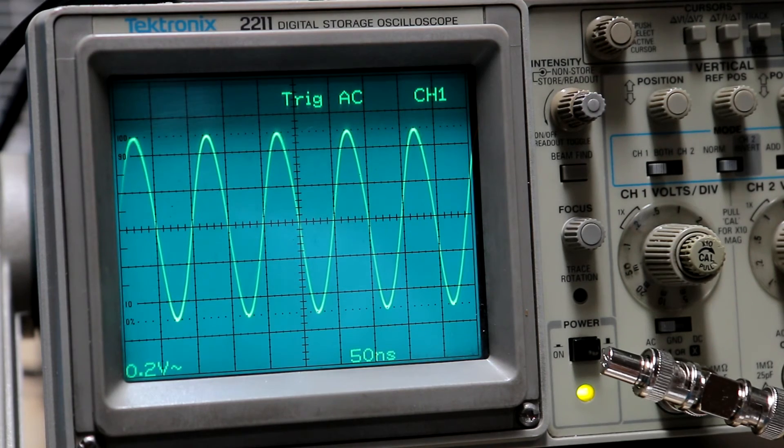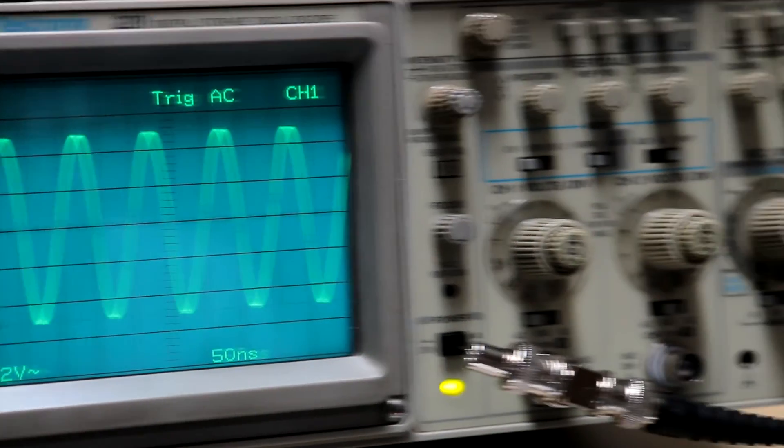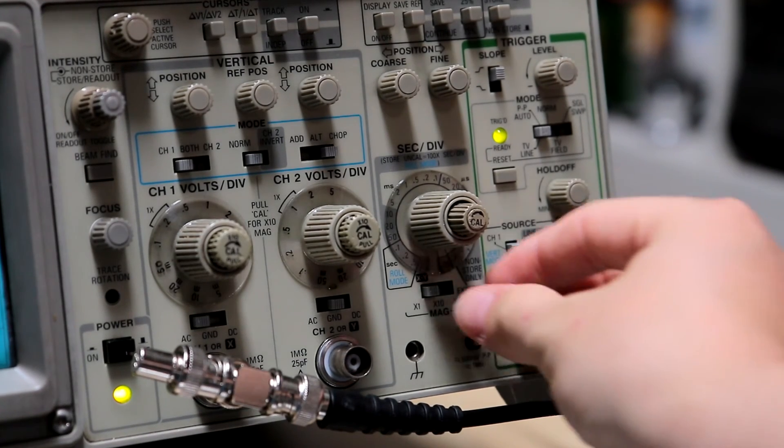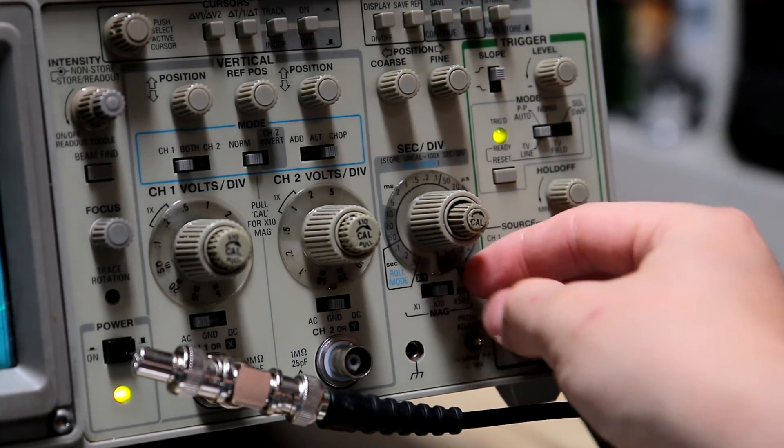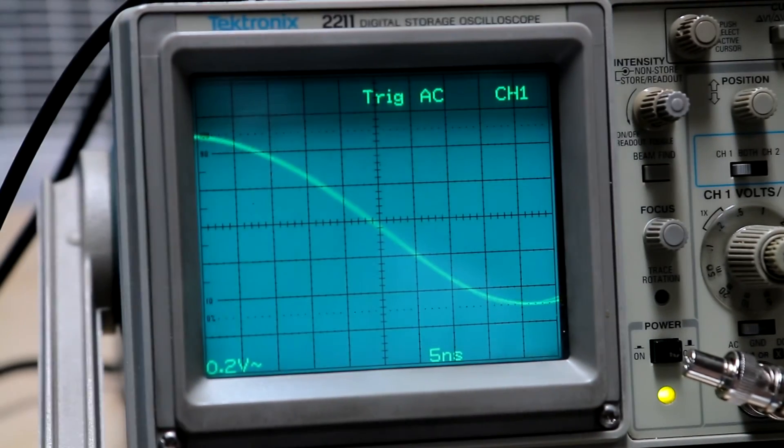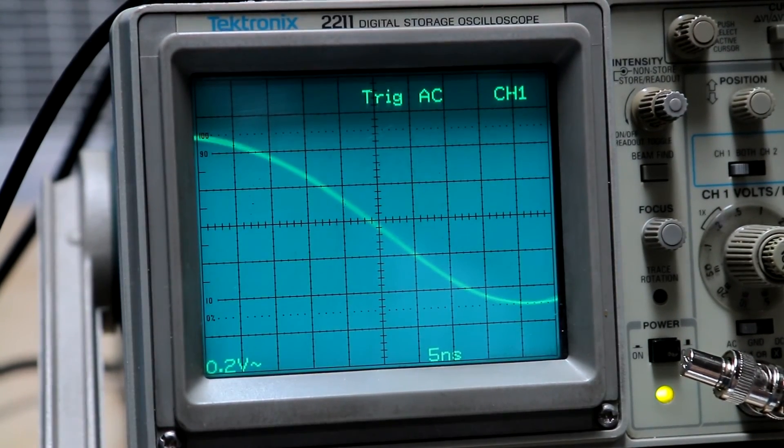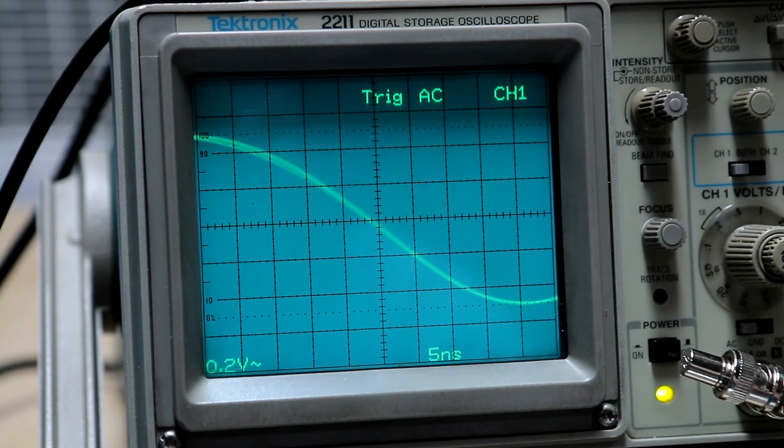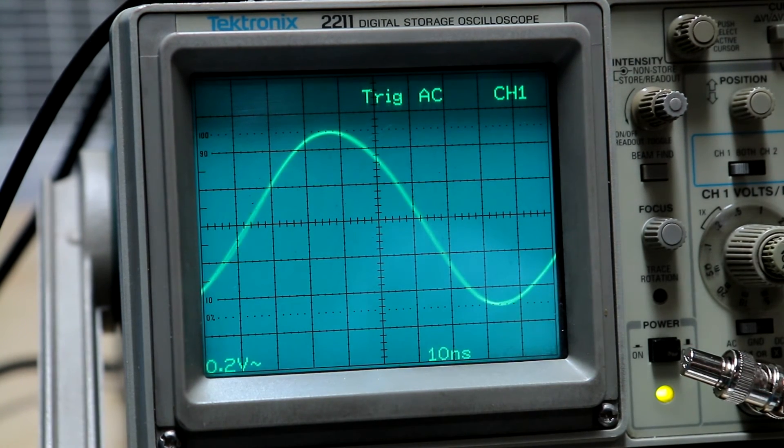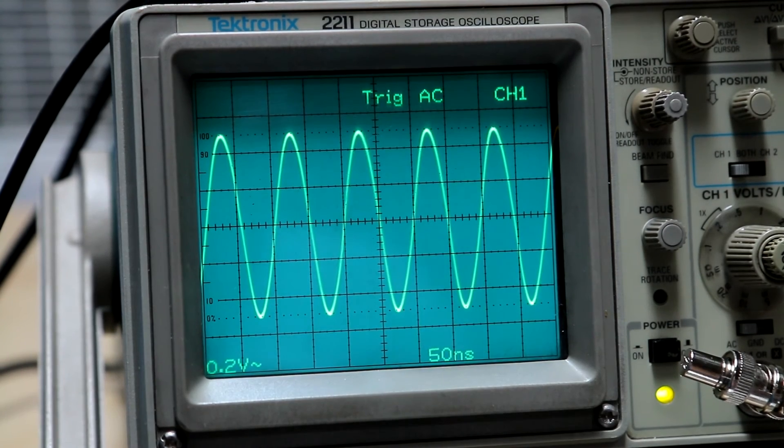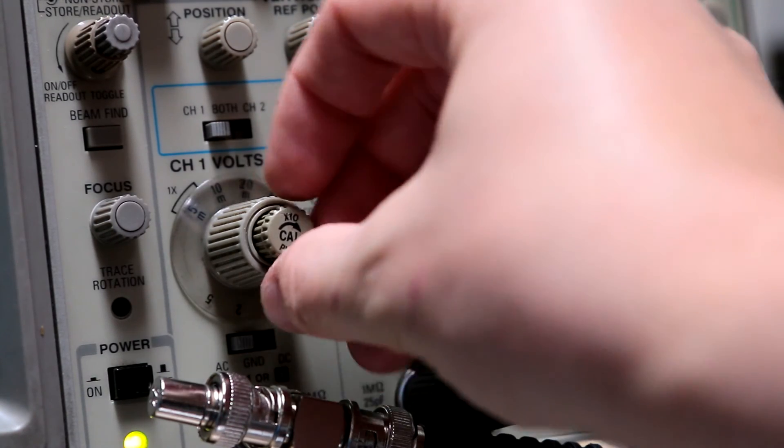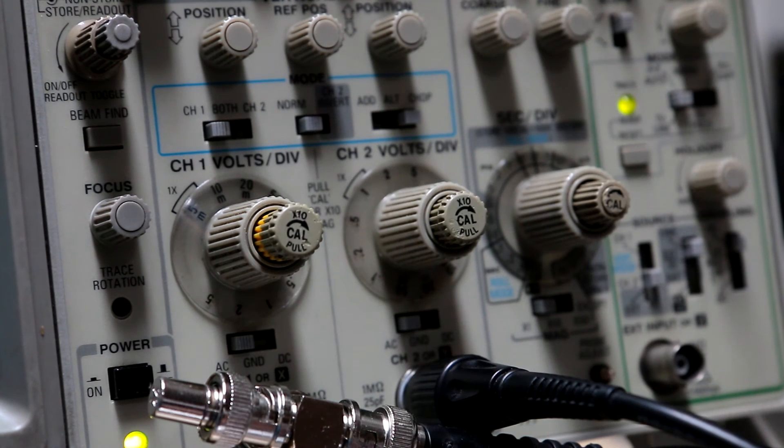But that's the fastest it'll go on time mode. But this scope does feature the x10 and x50 mag, so we can put that on x10 and then that allows us to get in there. But obviously it's a bit jittery. That's actually my function gen which is out by the way.